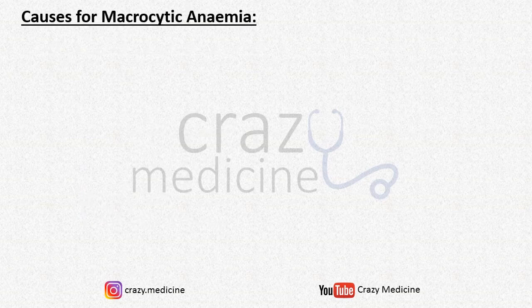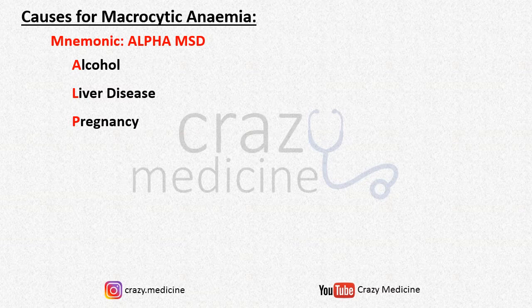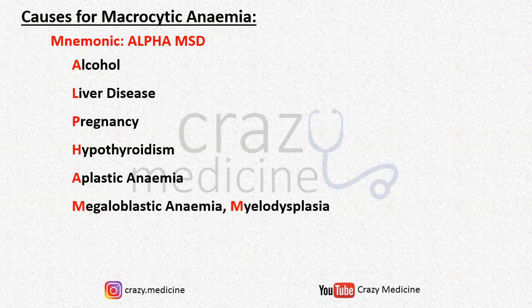Next is causes for macrocytic anemia. The mnemonic is ALPHA MSD. A stands for alcohol, L stands for liver disease, P stands for pregnancy, H stands for hypothyroidism, A stands for aplastic anemia, M stands for megaloblastic anemia and myelodysplasia, S stands for sideroblastic anemia, and D stands for drugs.